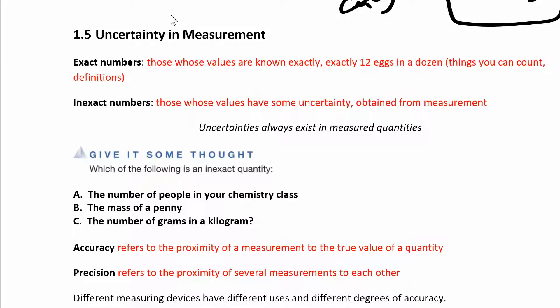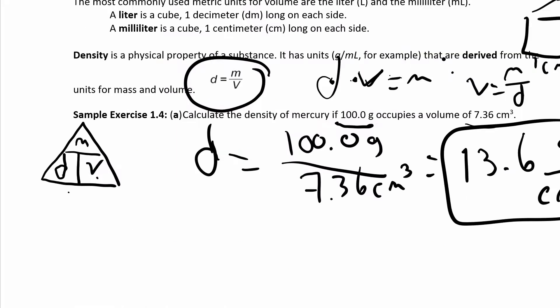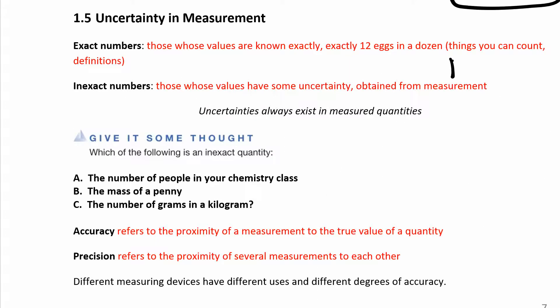We can look at some uncertainty in measurement. We're going to look at exact numbers and inexact numbers. Exact numbers are things that you can count — like there are exactly 12 eggs in a dozen. Things you can count have a definition, some kind of defined quantity. For example, there are exactly 1,000 grams in 1 kilogram. That's an exact number because we define it to be that way.